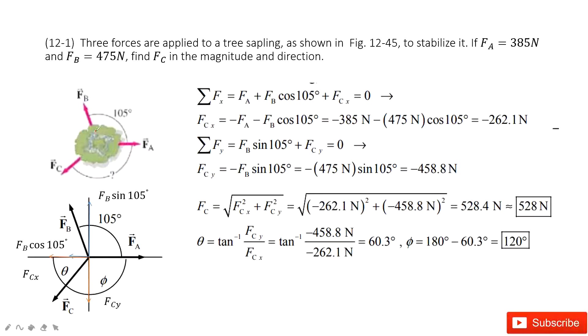If we want to make it balanced, that means the net force is zero. So we do the first analysis for it. The first thing we draw is Fa as a vector, then Fb and Fc.